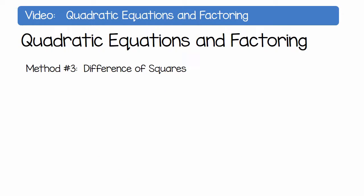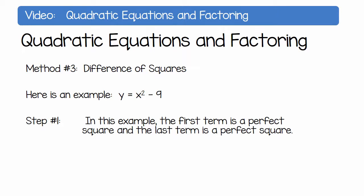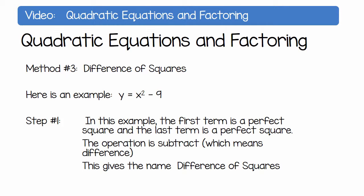Method number 3, the difference of squares. Here is an example: y equals x squared minus 9. In this example, the first term is a perfect square and the last term is also a perfect square. The operation is subtract, which means difference. So this is called the difference of squares.